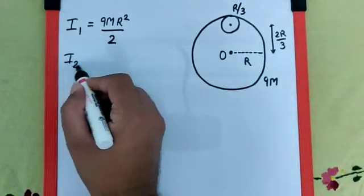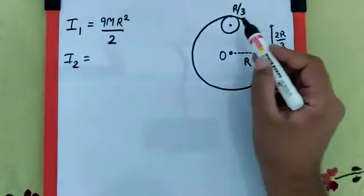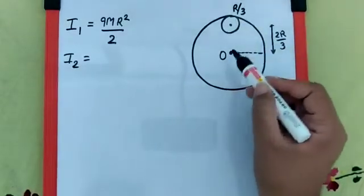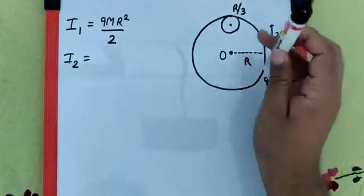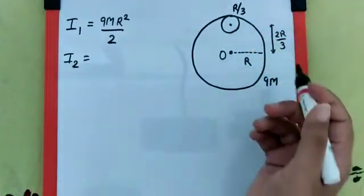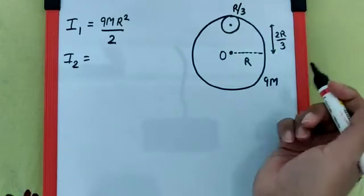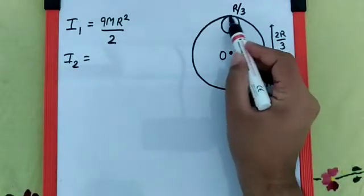Now, let's say I₂ is the moment of inertia of this disk about this axis passing through point O perpendicular to the plane, for which we have to use parallel axis theorem and we also need to find the mass of this disk.